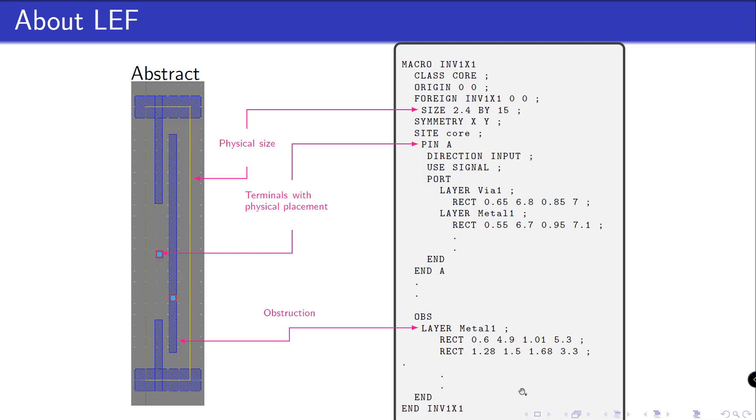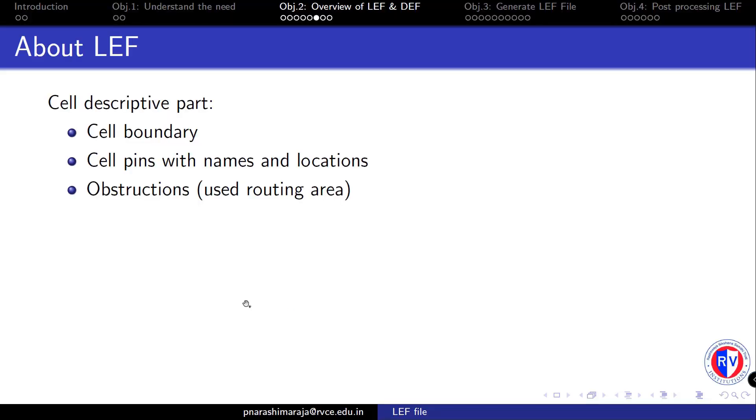It only gives the idea about the PR boundary, the pin positions, and the metal layer information of a cell without much internal details of the cells.